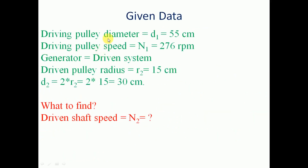The driving pulley diameter is given: D1 is equal to 55 cm. Driving pulley speed N1 is equal to 276 rpm. Generator is the driven system. Therefore, the driven pulley radius is given as R2 is equal to 15 cm. Therefore, the diameter D2 is equal to 2 into R2, that is 2 into 15, which gives 30 cm as the driven pulley diameter. We have to find the driven shaft speed N2.